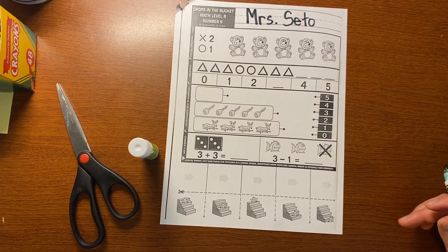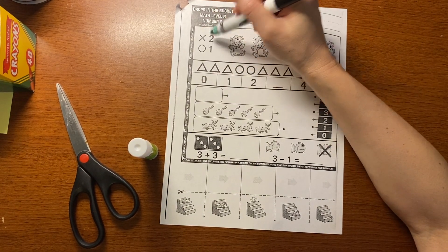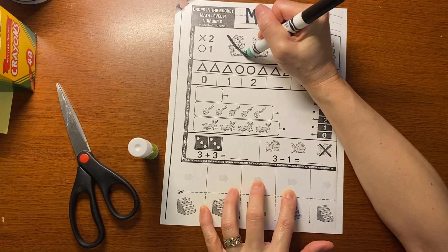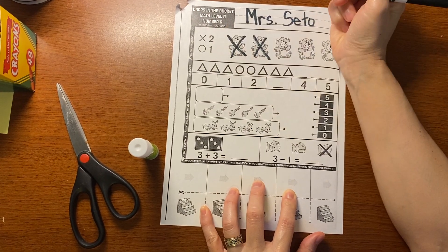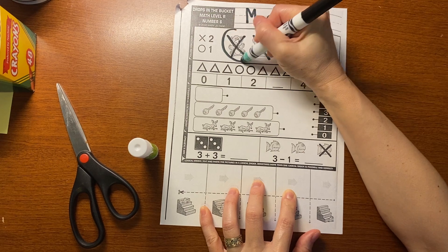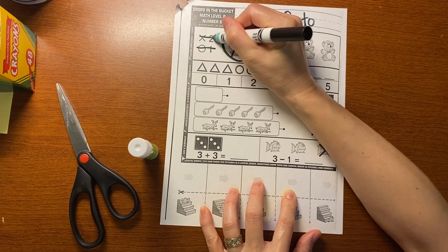Let's start on the top. It says cross out two bears and circle how many? Circle one. You can just circle the first one. It doesn't really matter which one you circle.